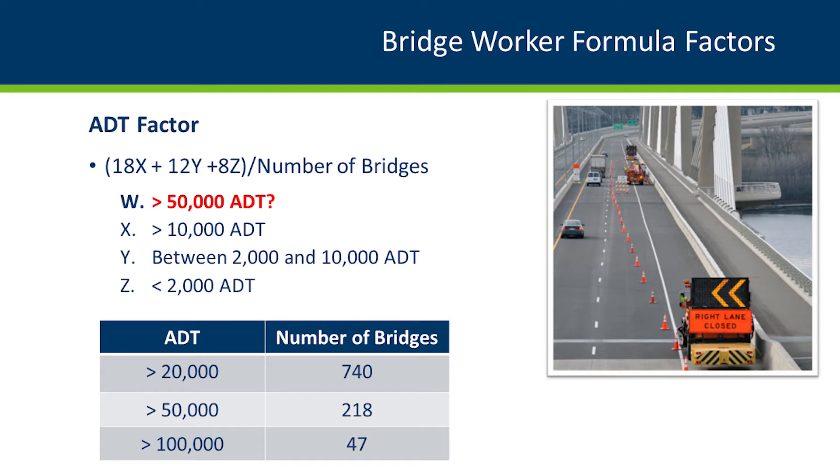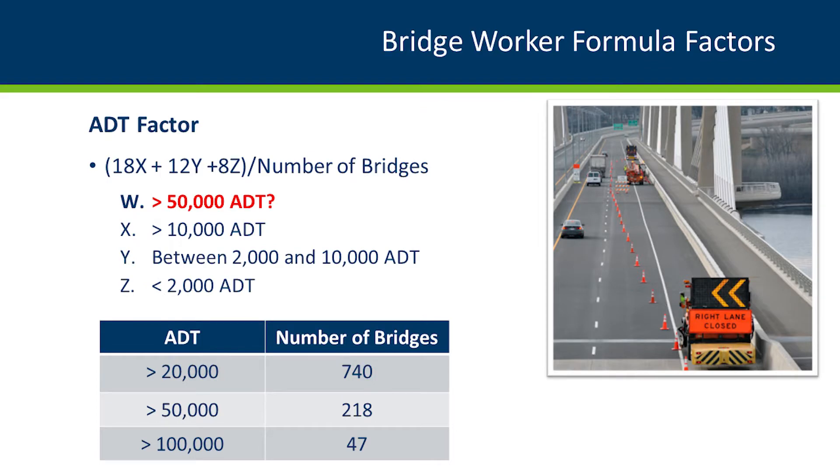Each factor has a specific formula associated with it, usually consisting of categories within that factor and empirical values assigned based on how much more maintenance might be needed. For ADT, we divided bridges into three categories: structures with less than 2,000 ADT, structures between 2,000 and 10,000 ADT, and structures with greater than 10,000 ADT. The empirical values — represented by 18, 12, and 8 in that formula — are weighted due to potentially increased traffic control needed or perhaps accelerated deterioration that comes with increased traffic levels.